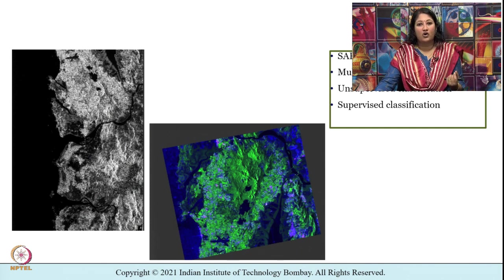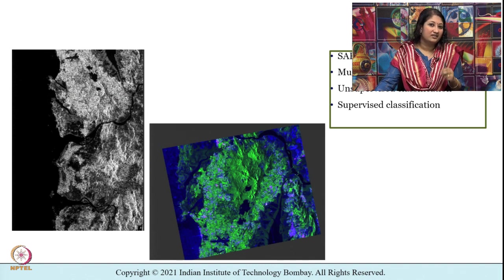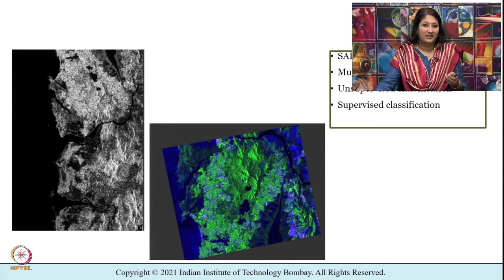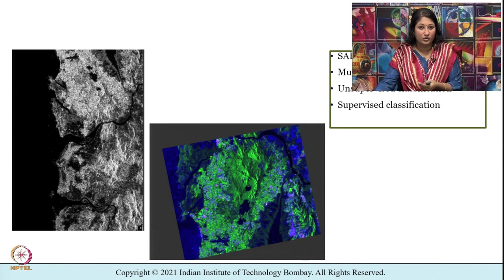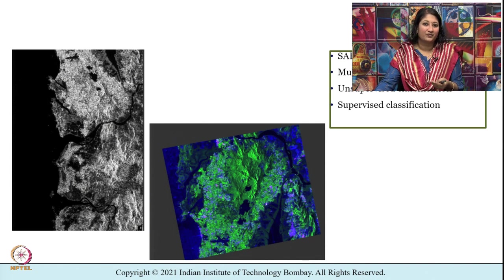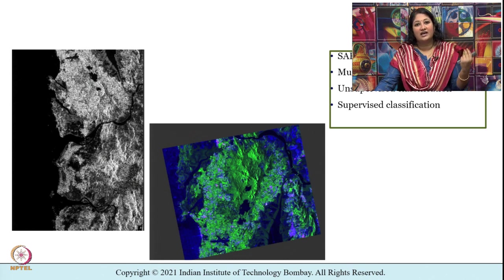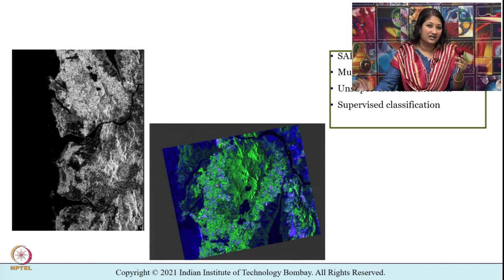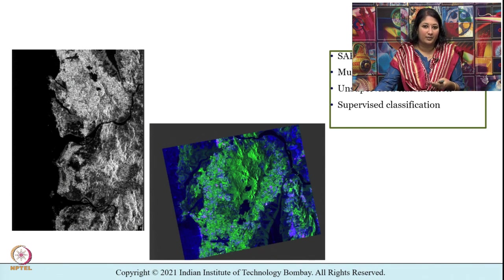We then performed de-skewing and terrain correction, where terrain correction corrects for geometric distortions. After that, we created a third band by performing band ratioing in SNAP, produced an RGB image, and ended with unsupervised classification of that image, assigning clusters to generate a classification map.